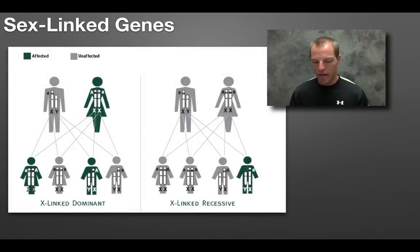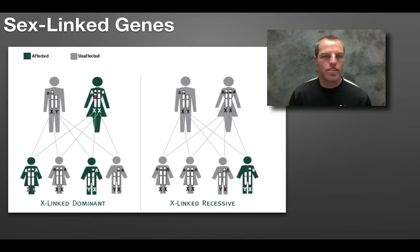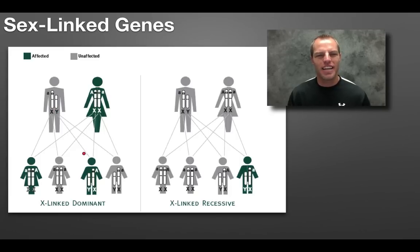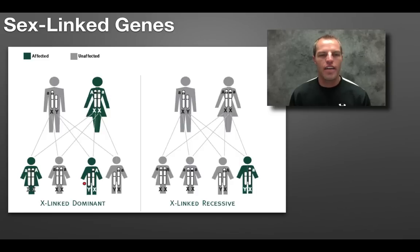Why is this important? Let's say there's a disease or trait that rides on the X chromosome — it could be dominant or recessive. If it's dominant, the mom could pass the X down to a son. The only chromosome a dad can pass to his son is the Y chromosome, because if he passed his X it would be a daughter. So males always get the Y from their dad. Both males and females will have an X-linked dominant trait fairly equally.